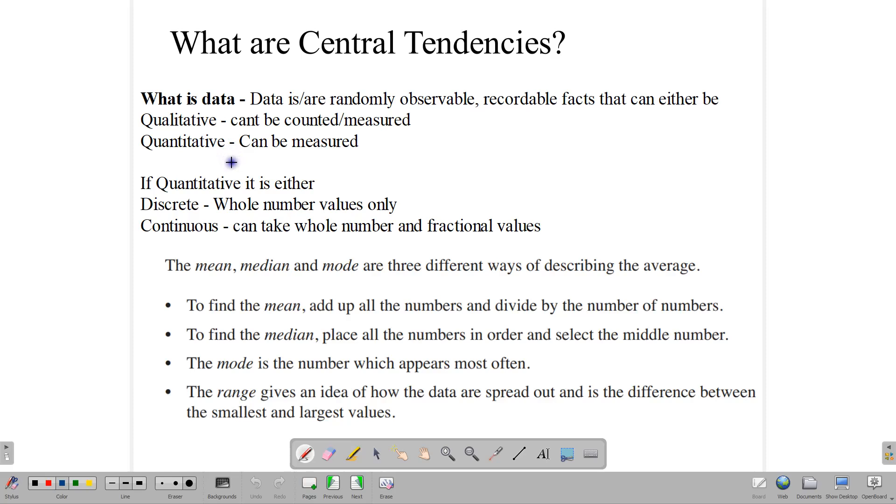So first of all, data is randomly observable facts that are recordable. It can be qualitative or quantitative, such as your name, your age, your weight, your favorite things, colors, styles, all of those. Everything is data. And data can be qualitative, as in the quality of something. So you can talk about your likes and how much you like. Or it can be quantity, in which case you can count it. So your age, for example, is quantitative, whereas the things that you like are qualitative.